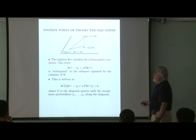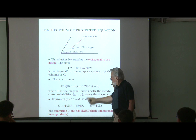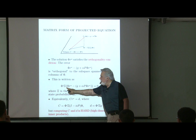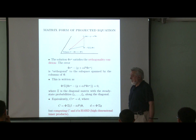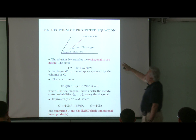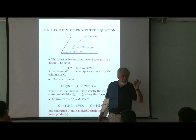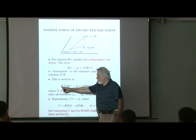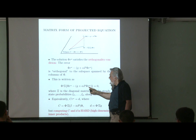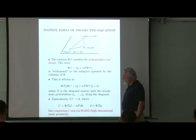The projected equation is equivalent to a matrix equation: C r* equals d. The matrix C is phi-transpose times the diagonal matrix psi times (I minus alpha P) times phi, and the constant vector d is computed similarly. Although this projected equation seemed abstract, it is now very concrete — it is just a matrix equation. Importantly, this equation is s-by-s, not n-by-n, because the column dimension of phi is small. It is a low-dimensional equation.